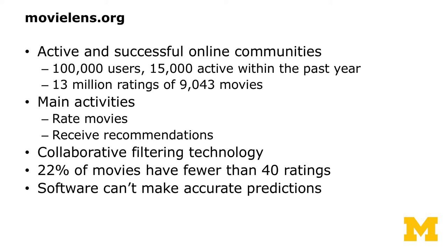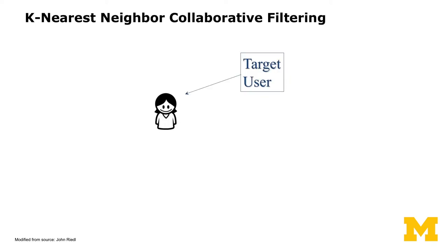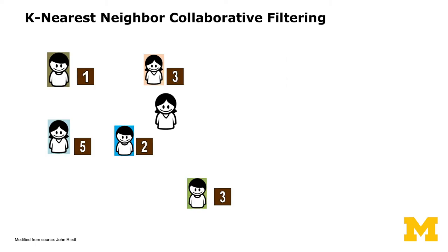The technology they use is called collaborative filtering. Even for a successful online community like MovieLens, 22% of their movies in the database had fewer than 40 ratings — so few that the software cannot make accurate predictions. This is an illustration of the K-nearest neighbor collaborative filtering technology from John Riedel. This motivates why we'd like people to contribute more ratings. Suppose you have a target user you want to recommend movies for, but you don't know whether they'd actually like a particular movie.